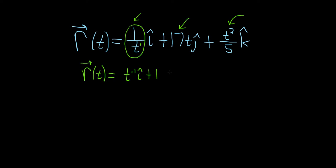Plus 17t ĵ, plus — and let's go ahead and write this last piece as (1/5)t squared k̂. It just makes it a little bit easier to think about when you differentiate.